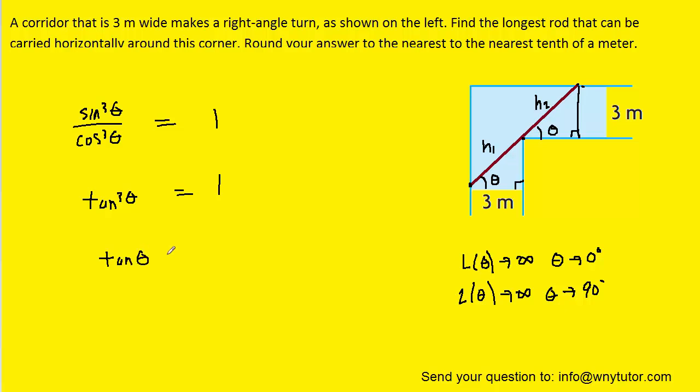We could then cube root both sides so that the tangent of theta is equal to 1, and then when we take the arctan, we can see that theta is equal to 45 degrees, which falls neatly right in the middle of our domain.